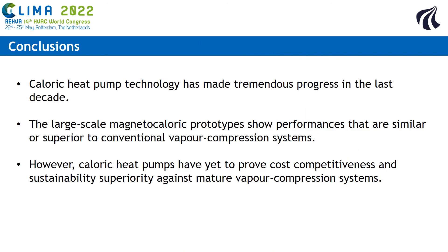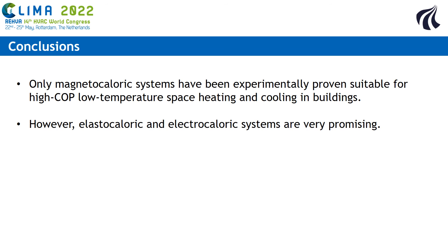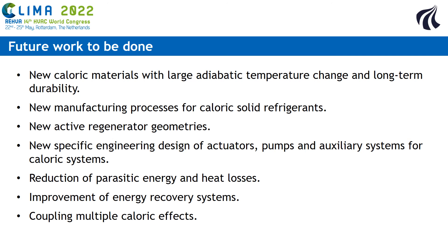Caloric heat pump technology has made tremendous progress in the last decades. Large-scale magnetocaloric heat pumps now show performance that is similar or superior to conventional vapor compression systems. However, the systems have yet to prove their cost competitiveness and sustainability superiority against mature vapor compression systems. At the moment, only magnetocaloric systems have been proven experimentally to be suitable for low-temperature space heating and cooling in buildings, but elastocaloric and electrocaloric systems are very promising. There is still a lot of work to improve caloric heat pump technology: creating new caloric materials, new manufacturing processes for the refrigerant, new active regenerative geometries, new engineering designs for actuators, pumps and auxiliary systems, reducing parasitic energy and heat losses, improving energy recovery systems, and looking at the coupling between multiple caloric effects.